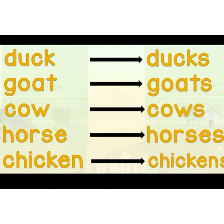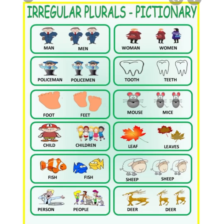Chicken becomes chickens. One duck, three ducks. As for this next type, we call it irregular plural. For irregular plurals, awak kena hafal — you must memorize them. It's special because you cannot simply add 's' or 'es'. It's different — walaupun ada 10, 8, or 1, the word takkan berubah in the usual way.